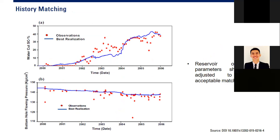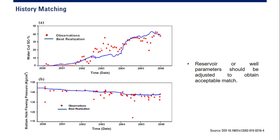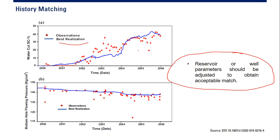History matching looks like this: the red dots are actual data or observations, and the blue line is the best realization — the history matching realization. Reservoir or well parameters should be adjusted to obtain an acceptable match. This is a subjective process — for one engineer it might already be a match, while another more perfectionist engineer may not accept it. So history matching is very subjective.